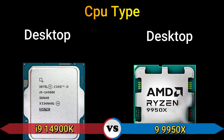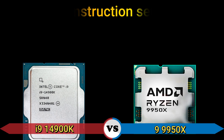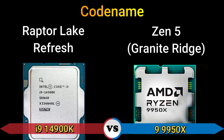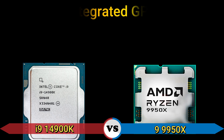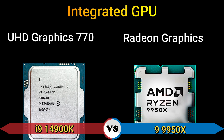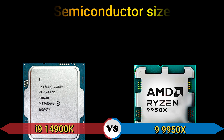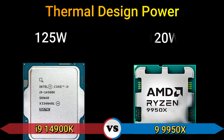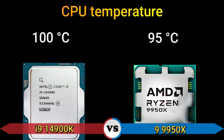CPU type: desktop. Instruction set: x86-64. Code name: integrated GPU — Intel UHD Graphics 770 and Radeon graphics. Semiconductor size: 10 nanometer and 4 nanometer. Thermal design power: 125 watts and 120 watts. CPU temperature: 100 degrees Celsius and 95 degrees Celsius.